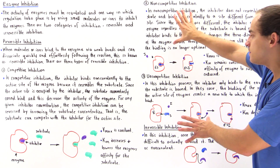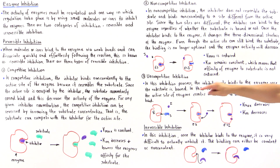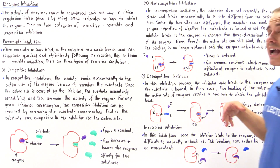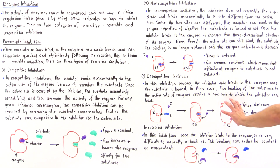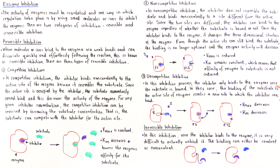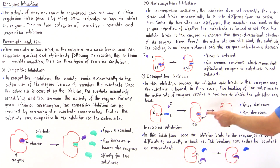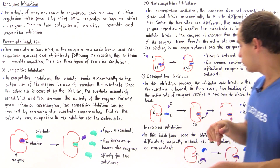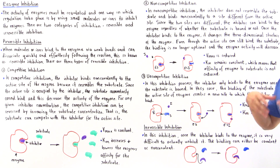That's the major difference between non-competitive and uncompetitive inhibition. In uncompetitive inhibition, the inhibitor only binds to the enzyme once the substrate is already bound. Once it binds, it basically deactivates that enzyme. The binding of the substrate to the active site creates a new site to which the inhibitor can bind, and once it binds, it deactivates the enzyme. In this case, Vmax decreases because we have fewer active enzymes, and the Michaelis constant Km also decreases.